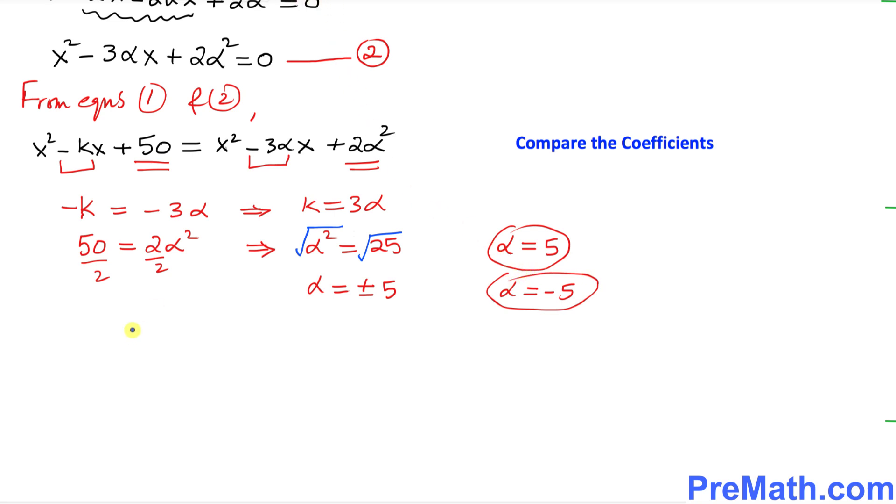Let's see what happens at alpha equals to positive 5. If I pick 5, and we know that k equals to 3 alpha, I can write k equals to 3 times alpha, and 3 times 5 is 15. So k equals to 15, that is one of the values.